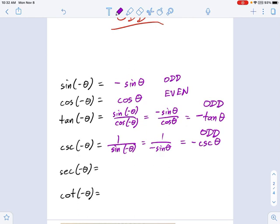And you can use the same arguments on secant. Secant is 1 over cosine. So 1 over cosine of negative theta. That's just 1 over cosine of theta because cosine itself is even. And that's equal to secant. So secant is even.